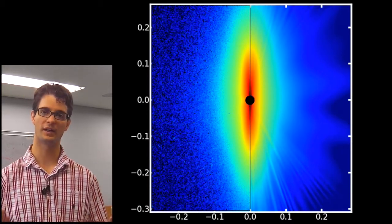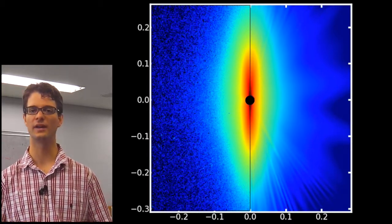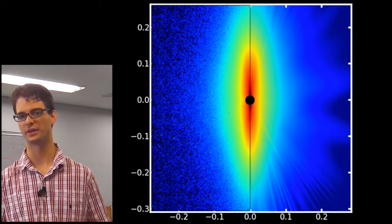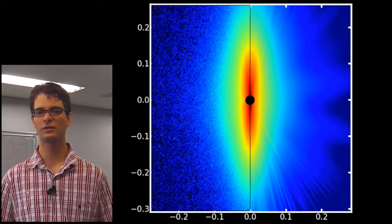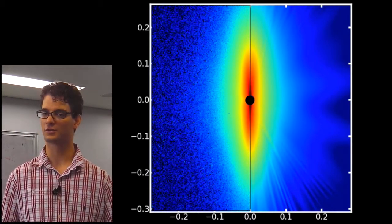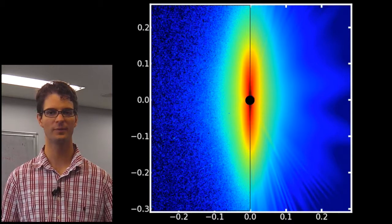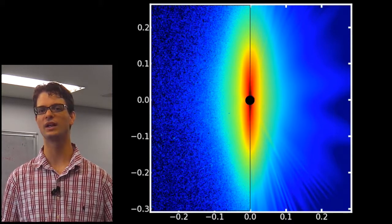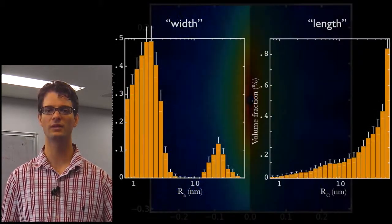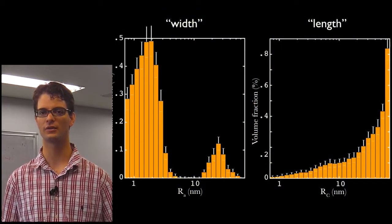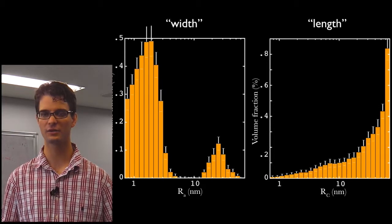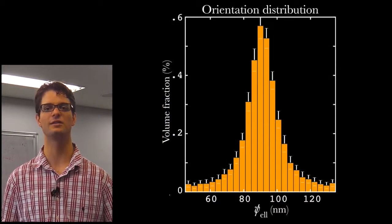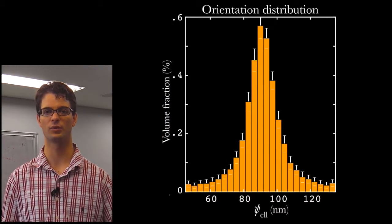The information we get out of it is very interesting from a material science point of view. We get information on the nanoporous structure inside the filaments. In particular, we get the width distribution of the nanopores, the length distribution of the nanopores, and the orientation distribution of the nanopores.